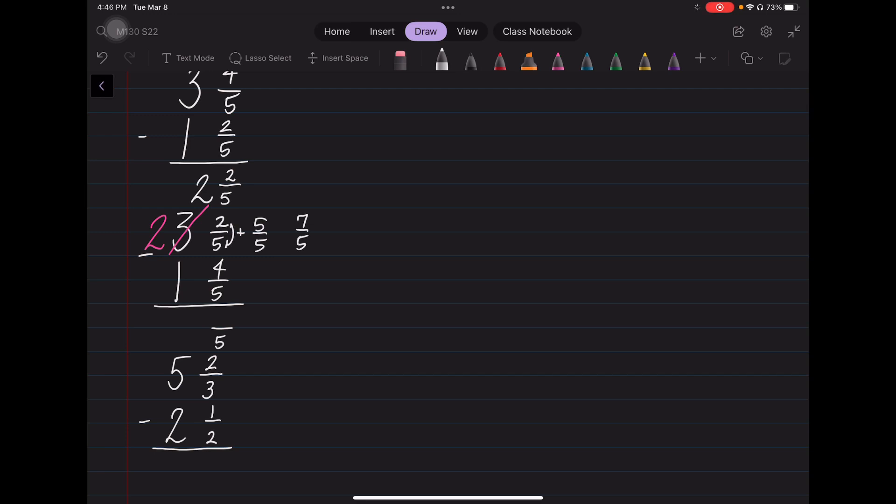Really, what you're doing is you're just adding the denominator to the numerator. 5 plus 2 is 7, and now I have 7 fifths minus 4 fifths, which is 3 fifths, and I can do that. And then 2 minus 1 is 1, and I'm finished.